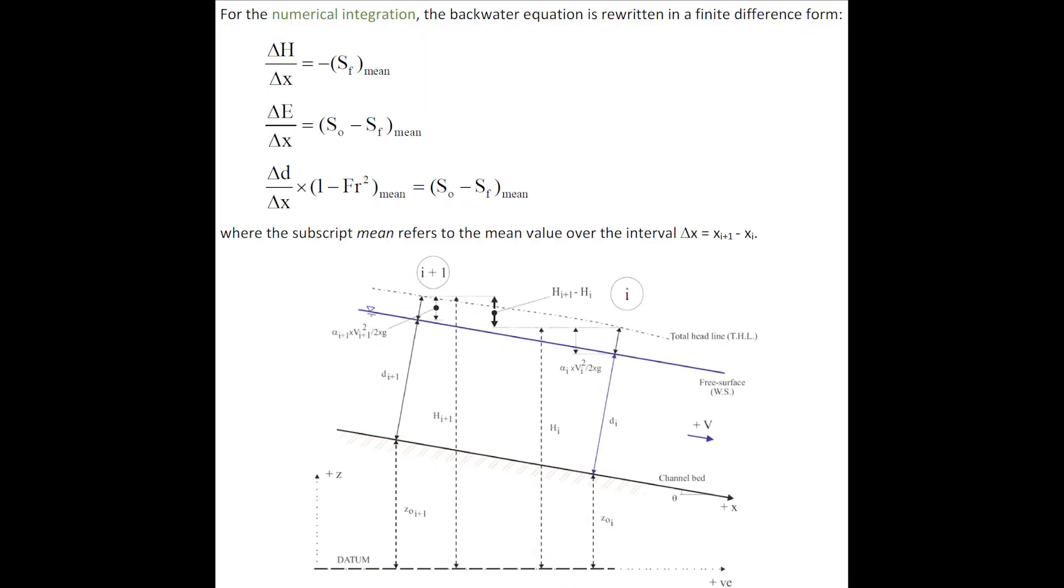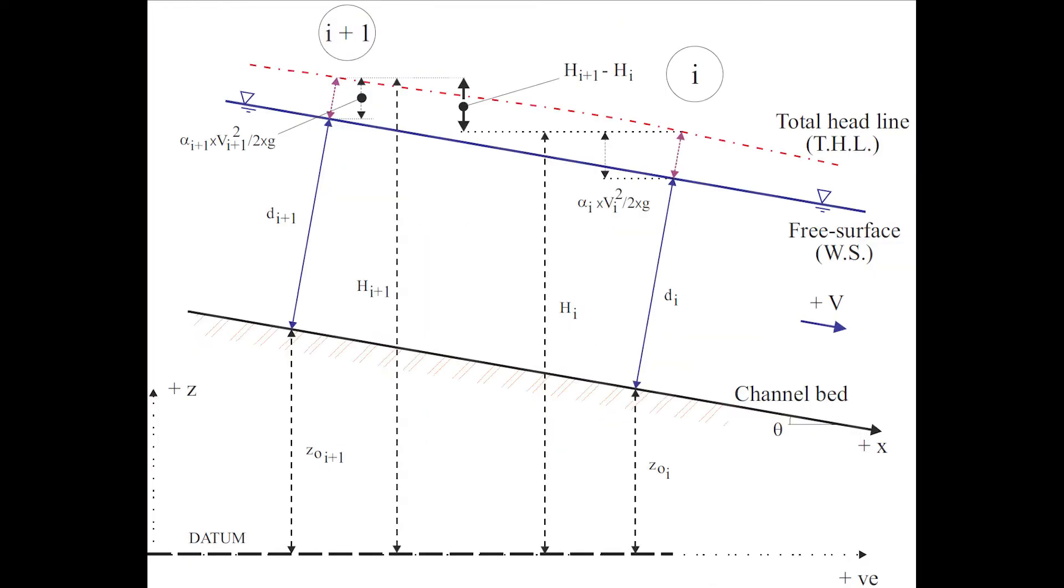For the numerical integration, the backwater equation is rewritten in a finite difference form, either in terms of the total head, specific energy, or water depth. Here, the subscript mean refers to the mean value over the control volume.